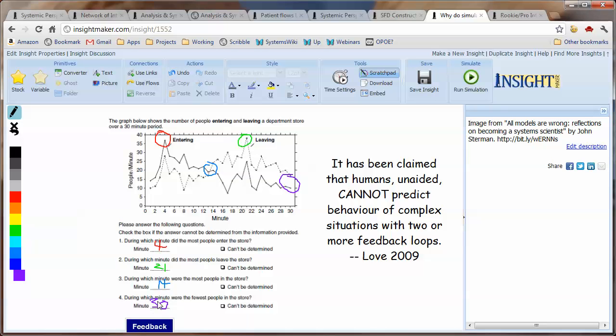And then the final question, during which minute were fewest people in the store? From this point to the end, there are more people leaving every minute than entering. So the number of people in the store continues to get less every minute. At time 30 is the fewest number of people in the store. This gives you a sense of what happens in terms of transitions.